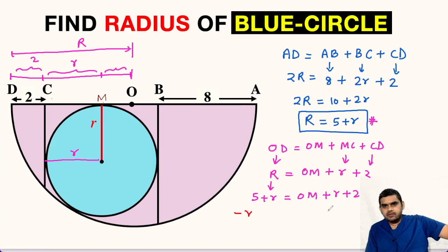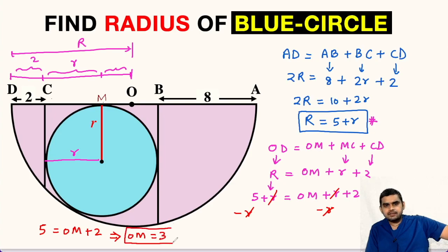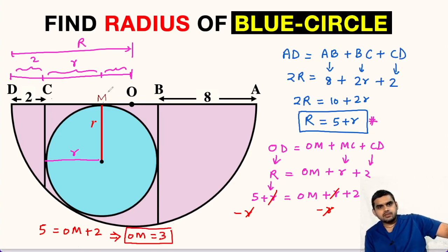We subtract r from both sides, giving us 5 = OM + 2. From here we get OM = 5 minus 2, that is 3. So we have found the value of distance OM as 3 units.